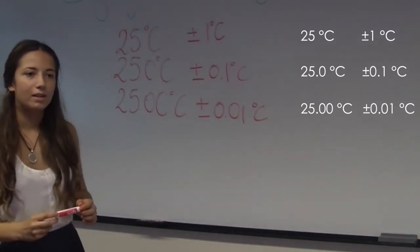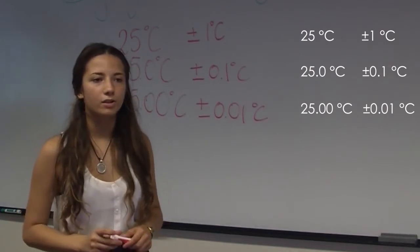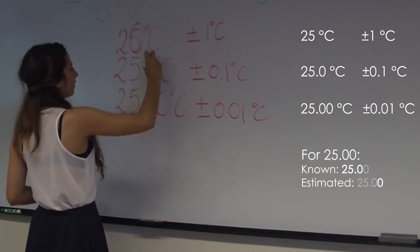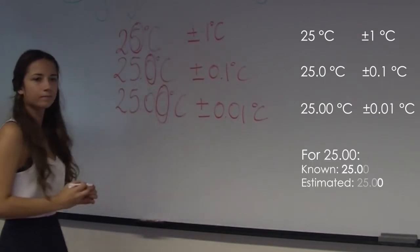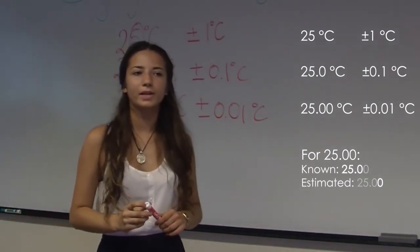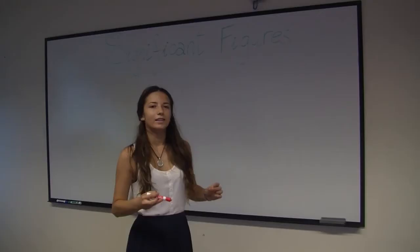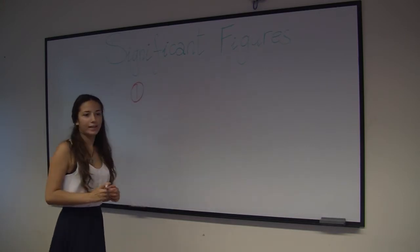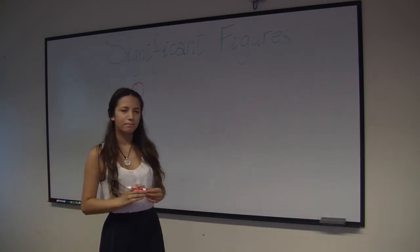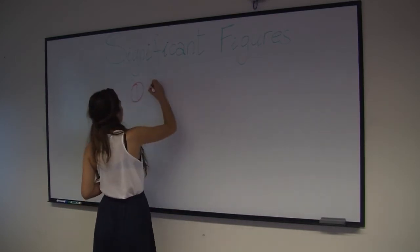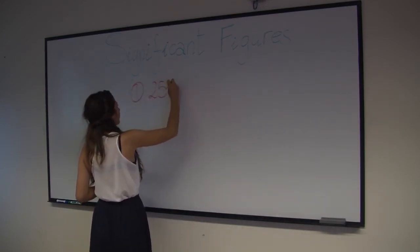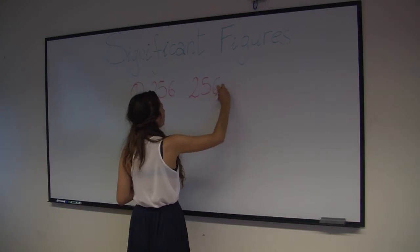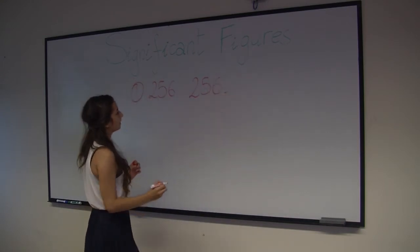The significant digits in a measurement consist of all the digits known with certainty, plus one final digit which is uncertain or estimated. There are a few simple rules to determine how many significant figures a number has. Let's start with rule number one. Any reported digit except for zero is definitely significant, but only some zeros are. Let's look at an example. The number 256 has three significant figures.